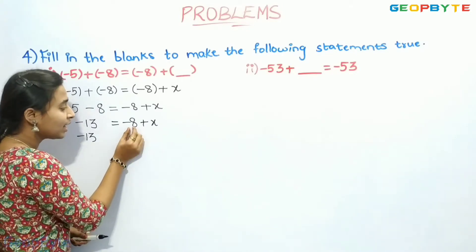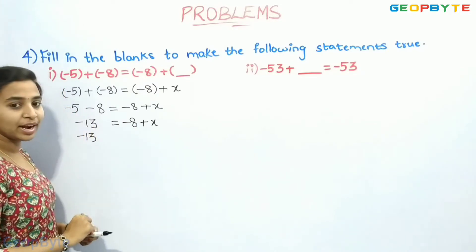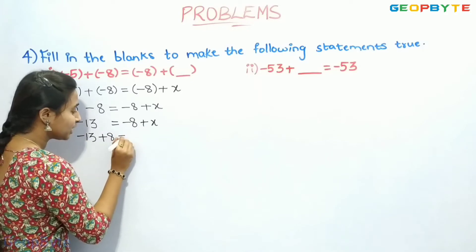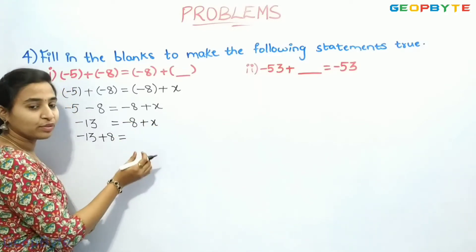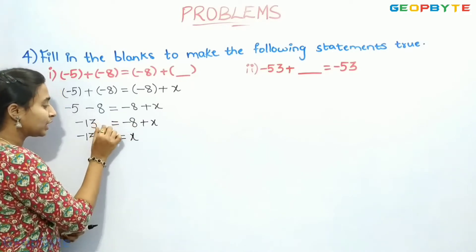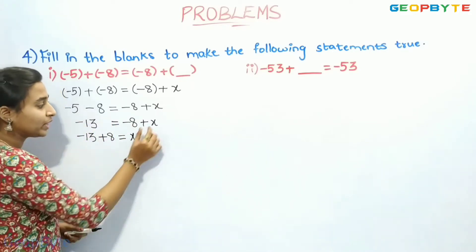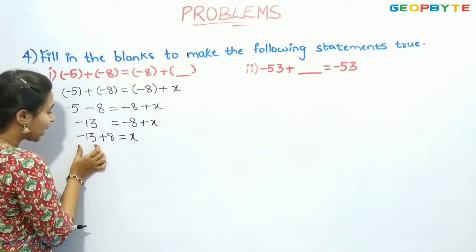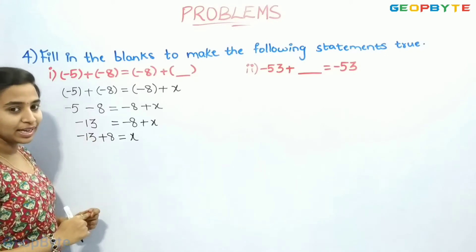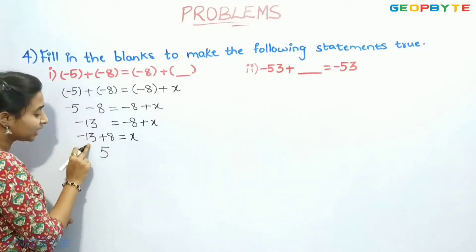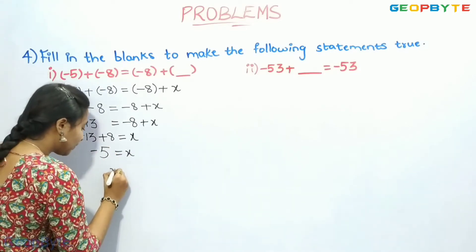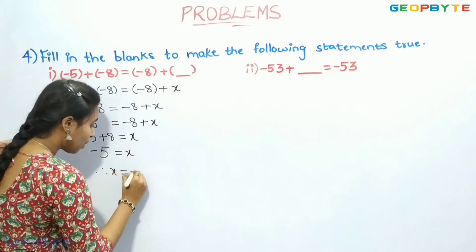On the right-hand side, 8 has a minus sign. If it comes to the left-hand side, it becomes plus 8. So minus 8 becomes plus 8, and the left-over element is x. Now we have minus 13 plus 8. Minus into plus gives minus, so minus 13 minus 8 is 5. But the sign for the greater number is minus, so minus 5 is equal to x.